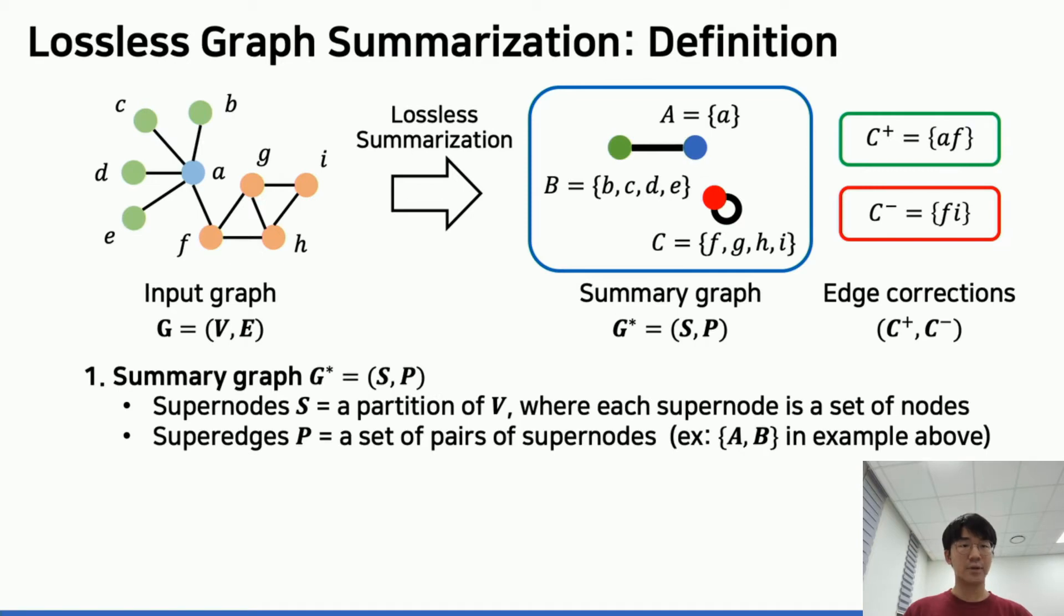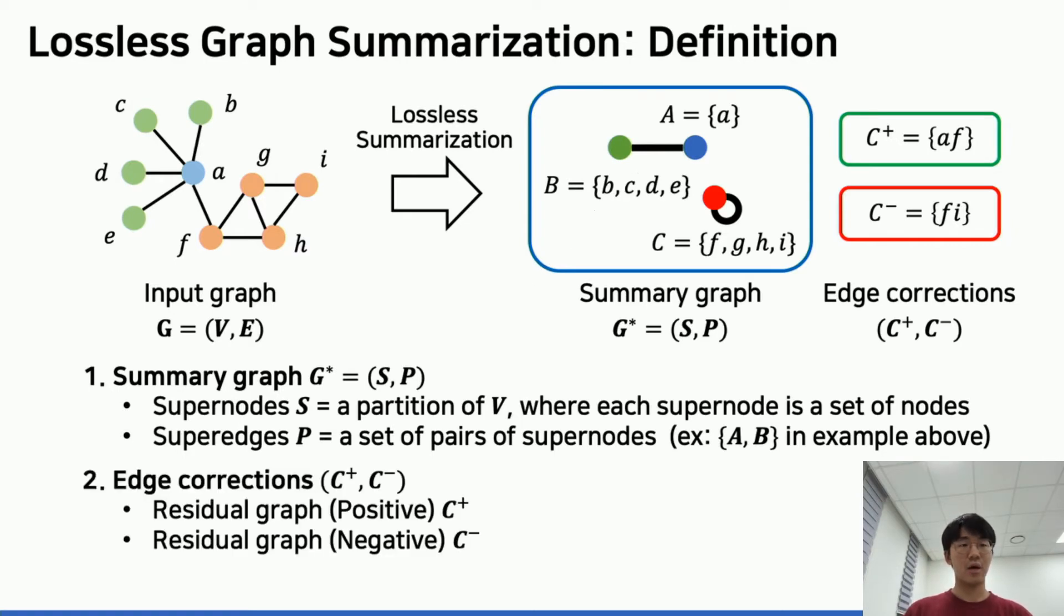The output consists of a summary graph and edge corrections. The summary graph consists of super nodes and super edges, giving a rough description of connectivity. A super node is simply a set of nodes forming a partition of vertices. A super edge is an edge between two super nodes. Edge corrections consist of two residual graphs for addition and deletion of edges.